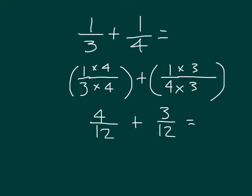And since we have like units now, we can just go ahead and add the numerators, 4 plus 3, which is 7, and the denominator stays the same. So that 1 third plus 1 fourth is equal to 7 twelfths. 7 twelfths is in the simplest form. So we are done with this problem.